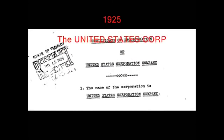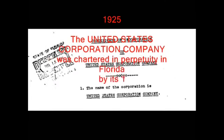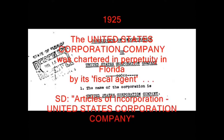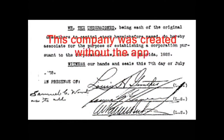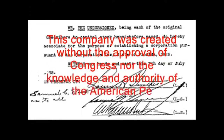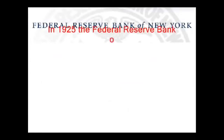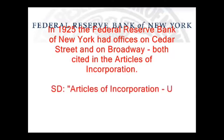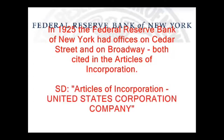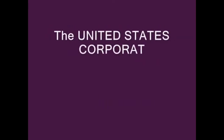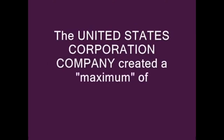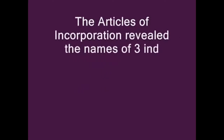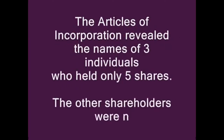1925: The United States Corporation Company was chartered in perpetuity in Florida by its fiscal agent. Source document: Articles of Incorporation, United States Corporation Company. This company was created without the approval of Congress nor the knowledge and authority of the American people. Note: in 1925, the Federal Reserve Bank of New York had offices on Cedar Street and on Broadway, both cited in the Articles of Incorporation. The Articles of Incorporation revealed the names of three individuals who held only five shares. The other shareholders were not identified.